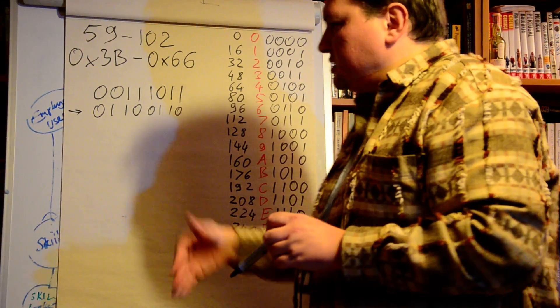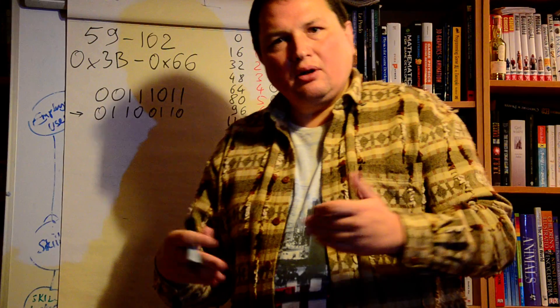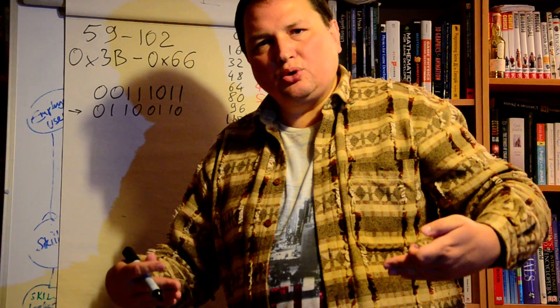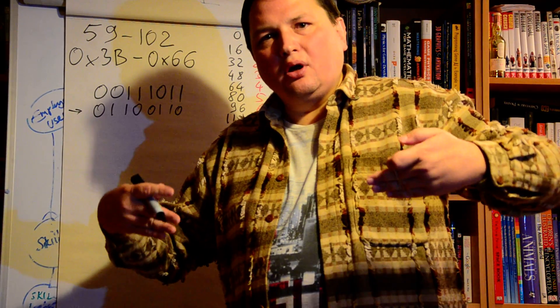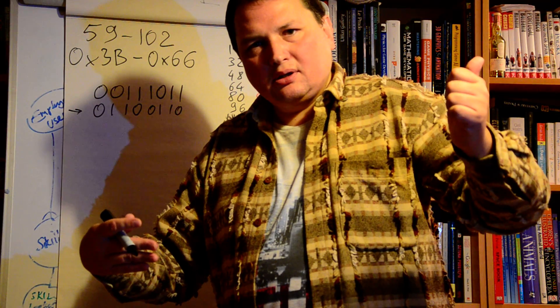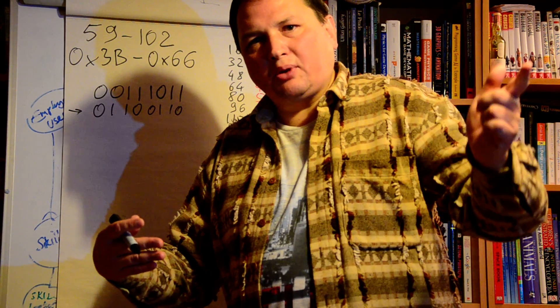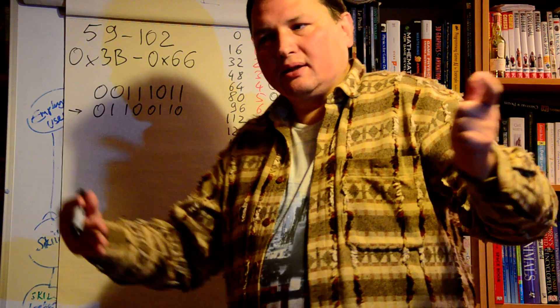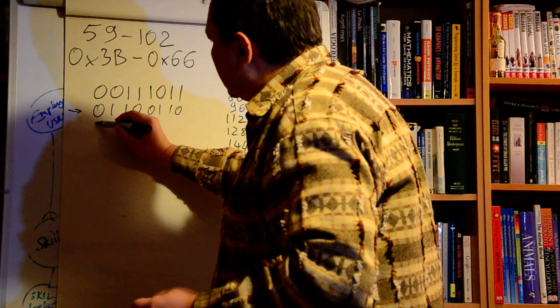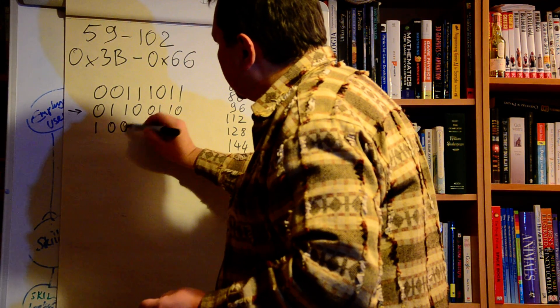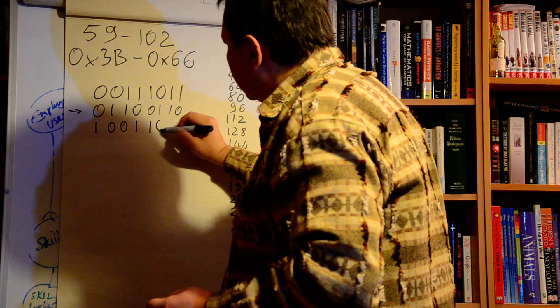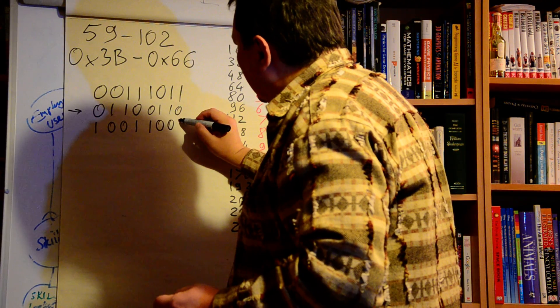This will go in two steps. The first step is flipping all bits. So in order to find a negative, we have to flip all bits. This is step number one, and step number two is to add one. Step number one: zero turns to one, one to zero, zero to one, one to zero, zero to one.